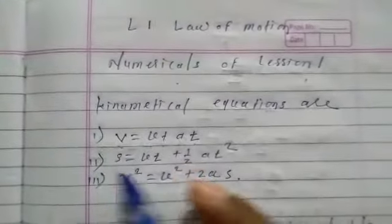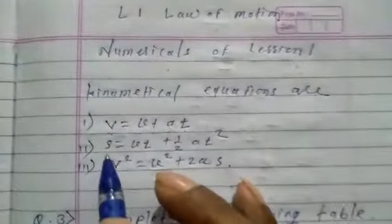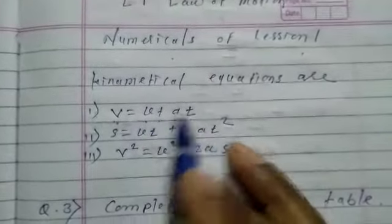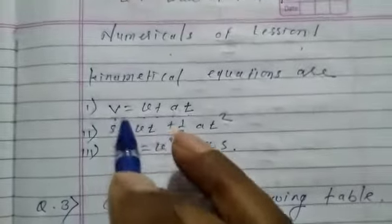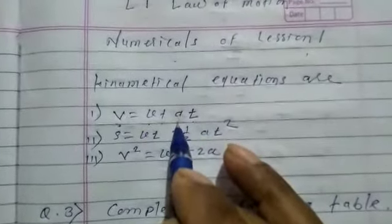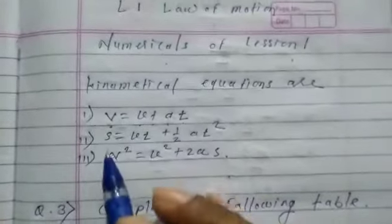For this we have the first kinematical equation: v equals u plus a t, where v is the final velocity, u is the initial velocity, a is the acceleration, and t is the time.